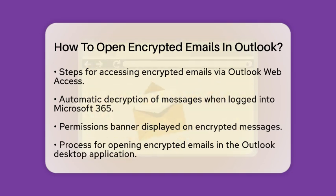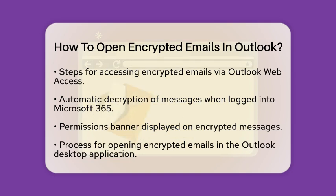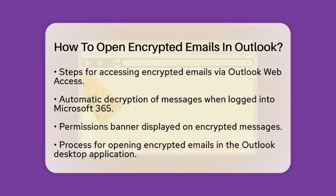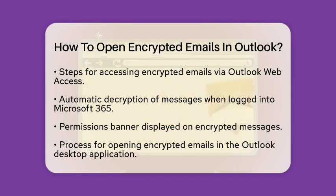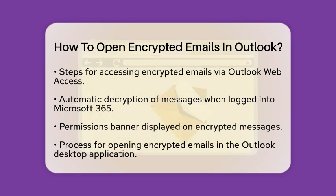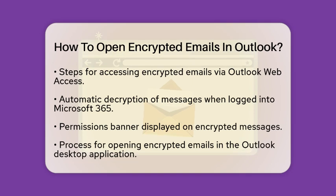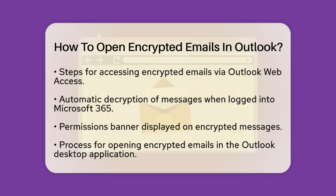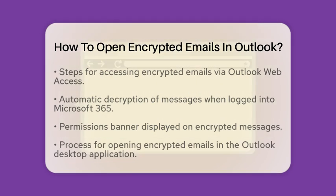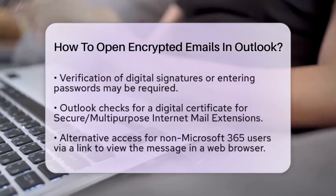Now, if you are using the Outlook desktop application, the steps may vary slightly. You may need to verify a digital signature or enter a password, depending on the type of encryption. For emails encrypted with Secure Multipurpose Internet Mail Extensions, Outlook will check for a digital certificate on your computer to decrypt the message.